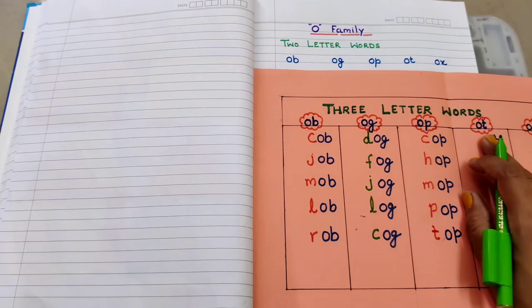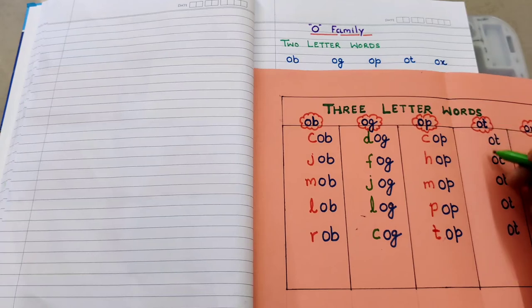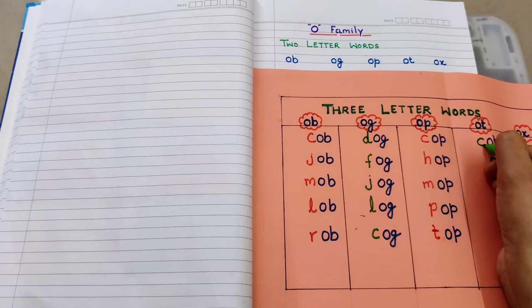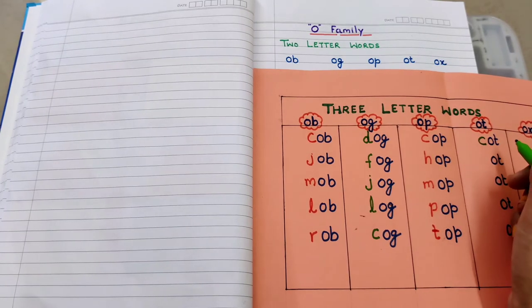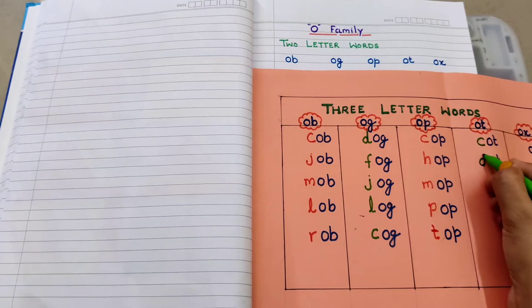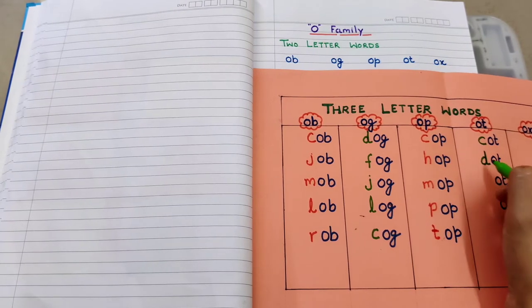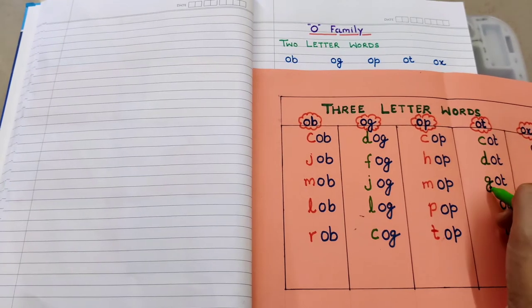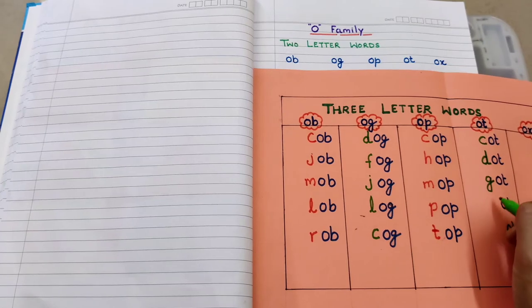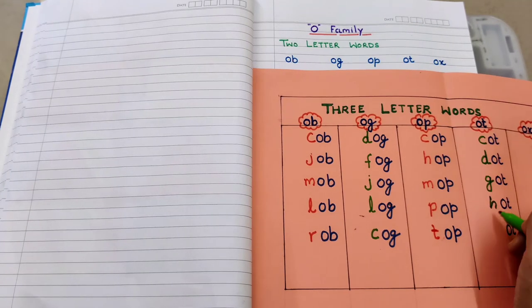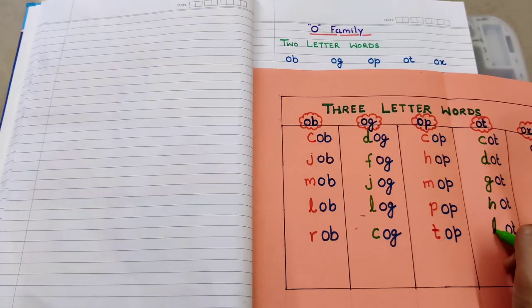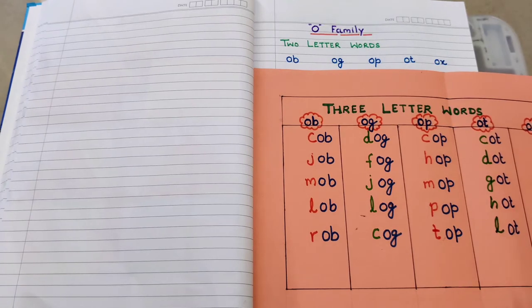Then next rhyme is 'ot'. In the ot rhyme we will also add on in the same way. First I'm adding C as a beginning letter - 'c-ot', cot. Next D - 'd-ot', dot. Next I'm adding G - 'g-ot', got. Then H - 'h-ot', hot. Then last I'm adding L as a beginning letter - 'l-ot', lot.